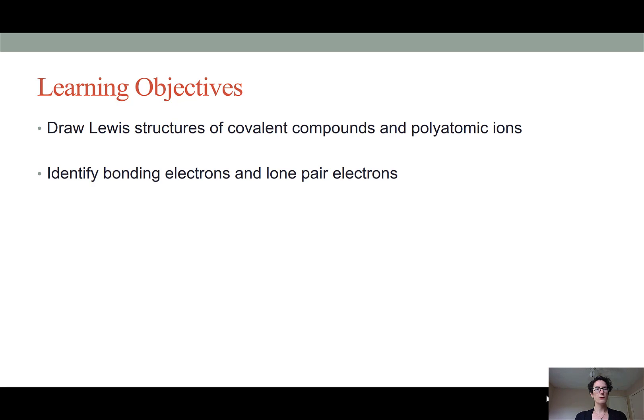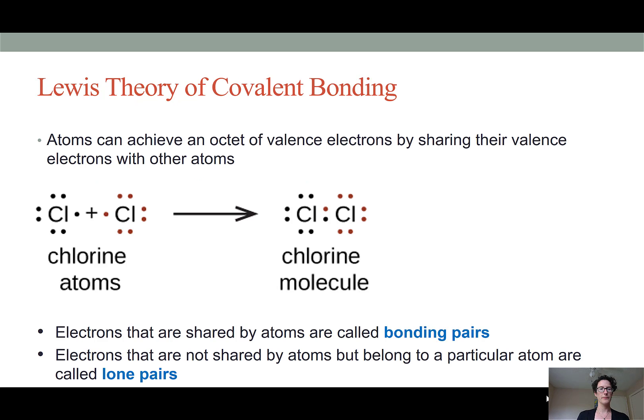Embedded within this understanding will be the ability to identify bonding electrons and lone pair electrons. Lewis theory of covalent bonding states that atoms can achieve a full valence octet by sharing their valence electrons with other atoms.